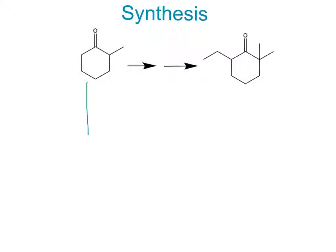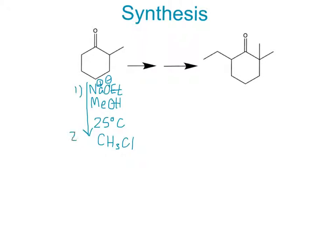So, based on what we just learned, we know we can react with a strong base, which will use sodium methoxide, and a polar protic solvent — we can use methanol. We react this at 25 degrees Celsius to get our thermodynamic enolate. Now, to get this methyl group here that we're looking for, we can just react this with a CH3Cl, and that will react with the enolate, as long as we do this in two steps.